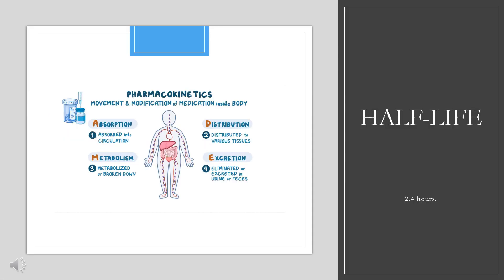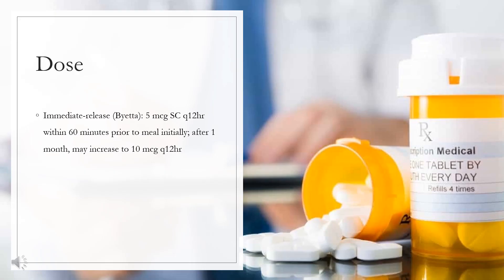Half-life: 2.4 hours. Dose — Diabetes mellitus type 2, adjunct to diet and exercise to improve glycemic control. Alternative monotherapy or as adjunct therapy with thiazolidinediones, metformin, or a sulfonylurea, or add-on therapy to insulin glargine (long-acting insulin).